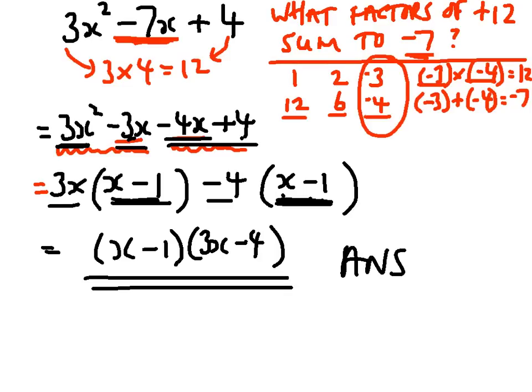And always a good habit just to check your answer very quickly before you finish there. x times 3x is 3x squared, x times minus 4 is minus 4x, minus 1 times 3x is minus 3x, and minus 1 times minus 4 is plus 4.